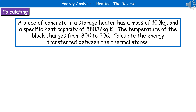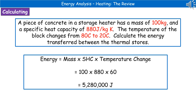The last thing to look at is the type of calculation we could be asked to do. A piece of concrete in a storage heater has a mass of 100 kilograms and a specific heat capacity of 880 joules per kilogram Kelvin. The temperature of the block changes from 80°C to 20°C. First, highlight the key information from the question. Then, since we're dealing with specific heat capacity, look up the equation: energy = mass × specific heat capacity × temperature change. Substituting in: 100 × 880 × 60 = 5,280,000 joules.